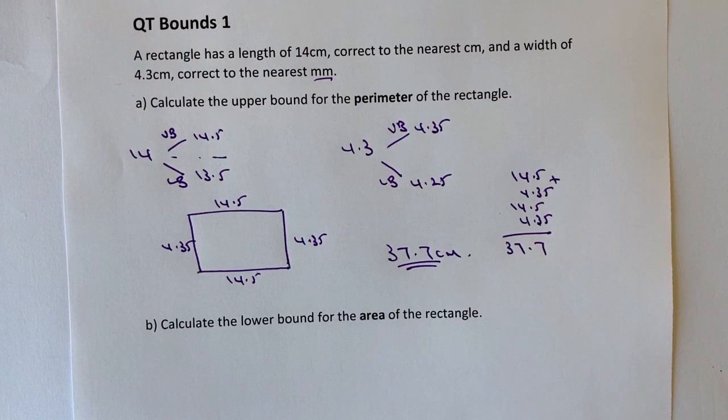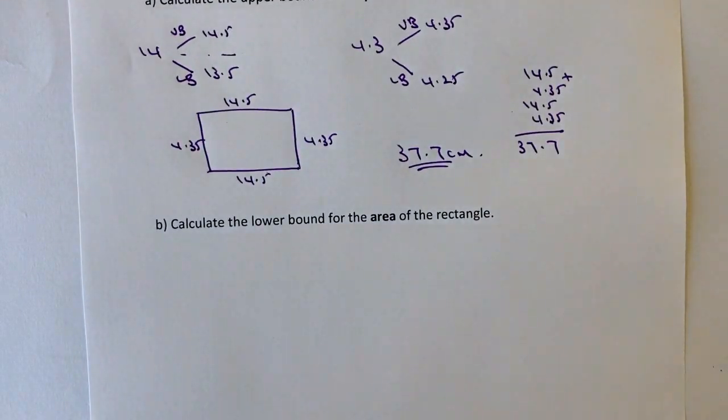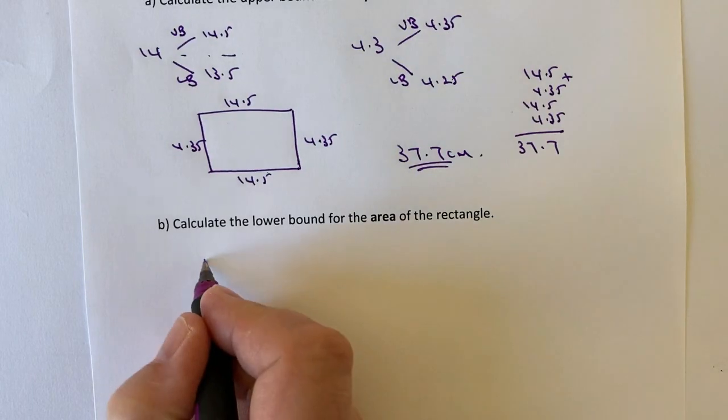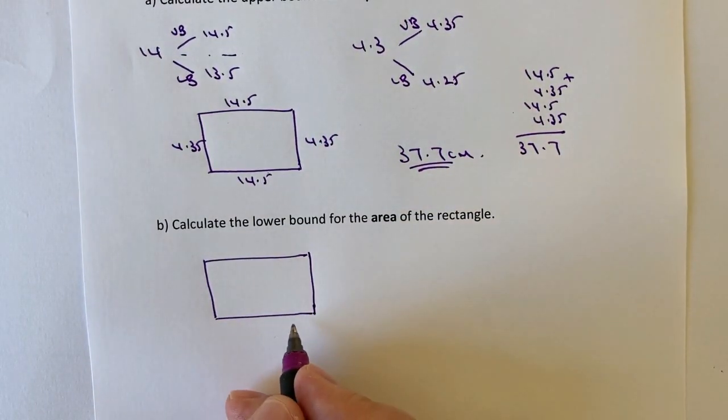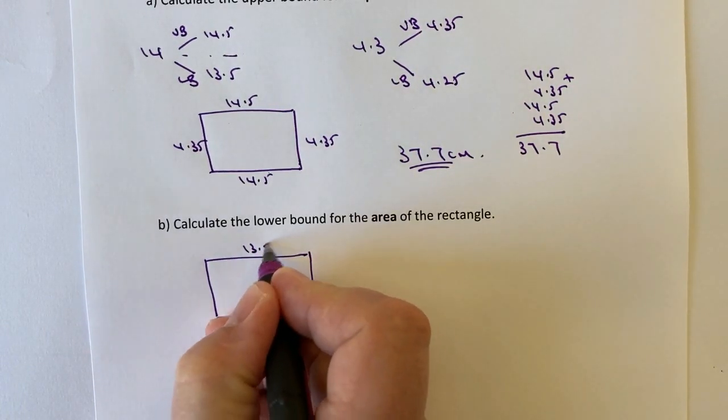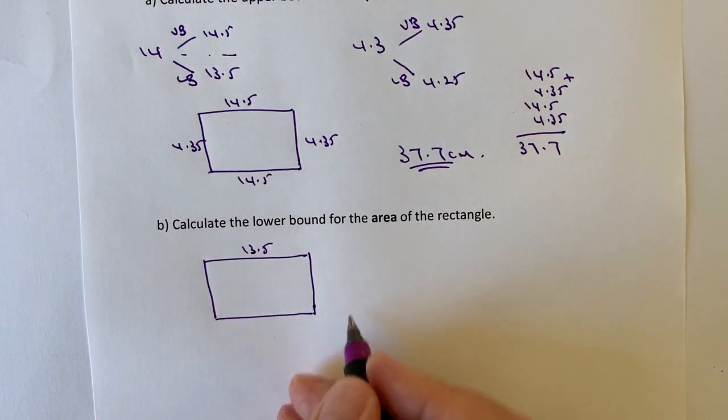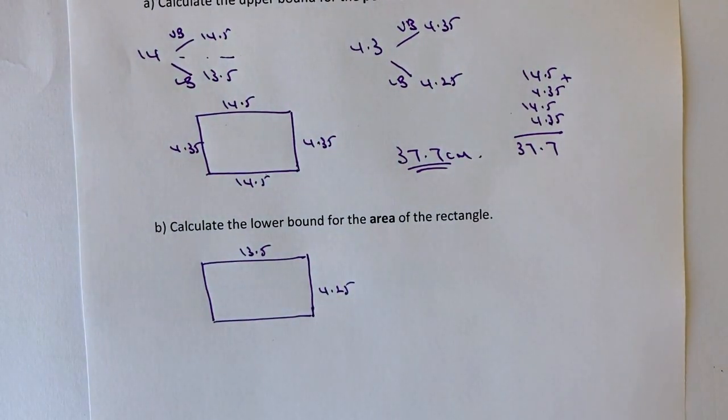We're going to apply similar sort of logic when we're looking at the lower bound for the area of the rectangle. So again, if I just sketch out the rectangle, nothing too fancy here, but the smallest the length is going to be is going to be 13.5. And the smallest the width is going to be is going to be 4.25.